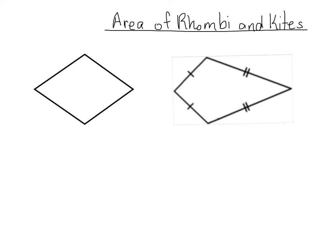In this video we're going to look at how to find the area of a rhombus and of a kite. But not only are we going to look at how to find the area, we're going to actually look at how the area formula comes about. So the first thing we're going to do in order to figure out the area formula is we're going to cut our kite into two equal triangles.